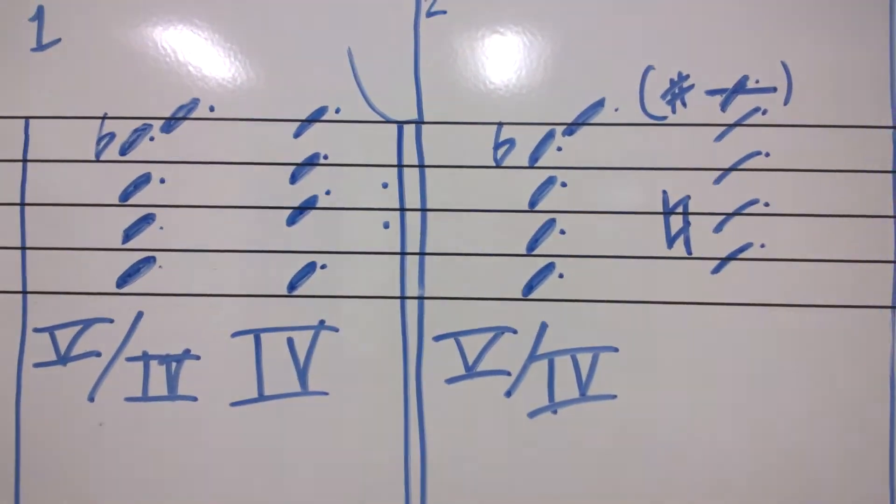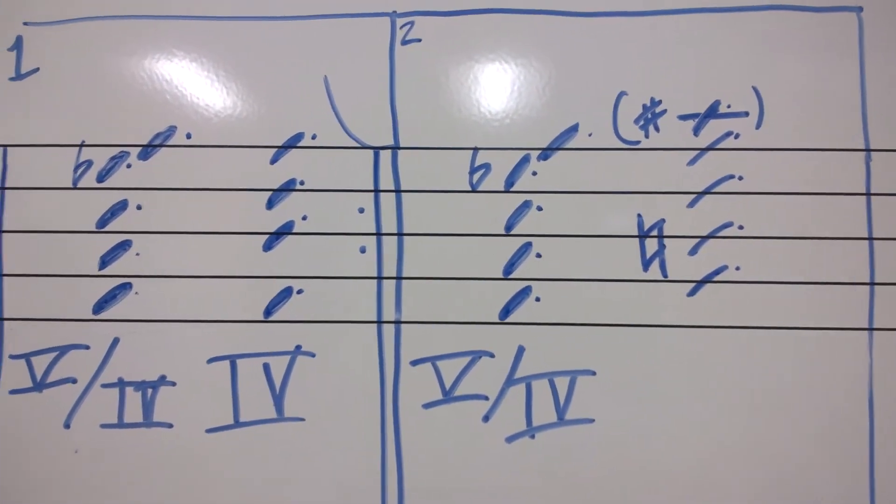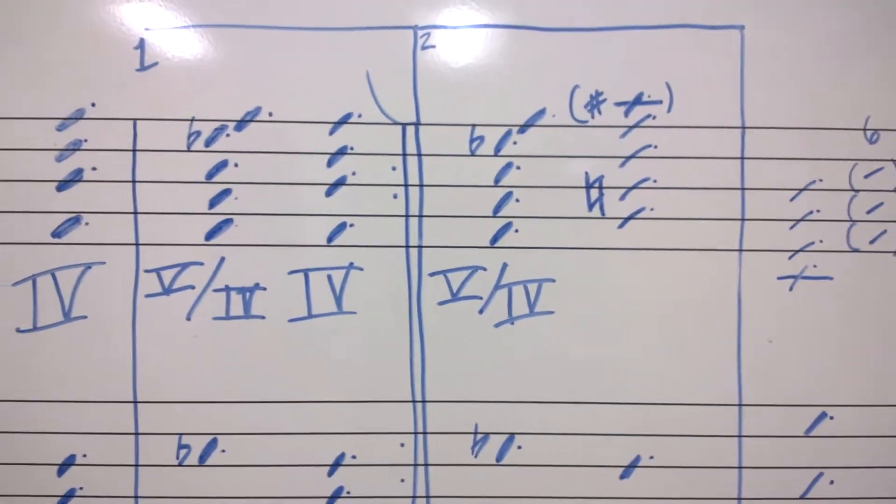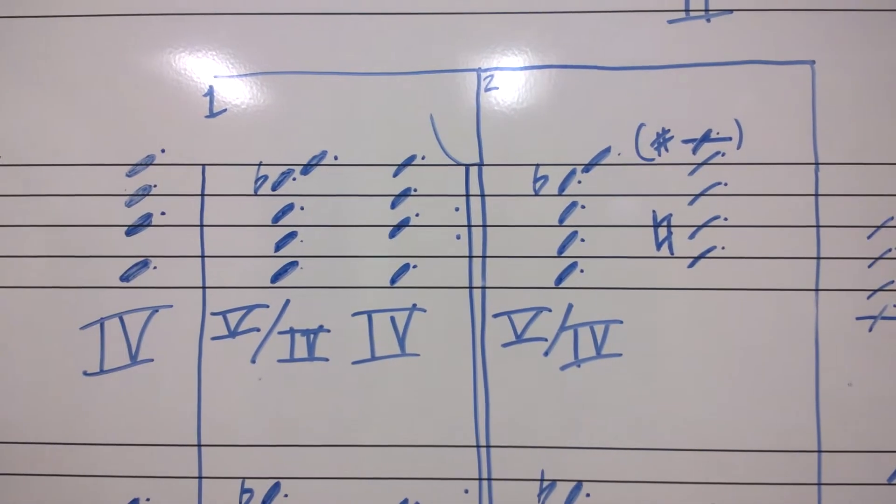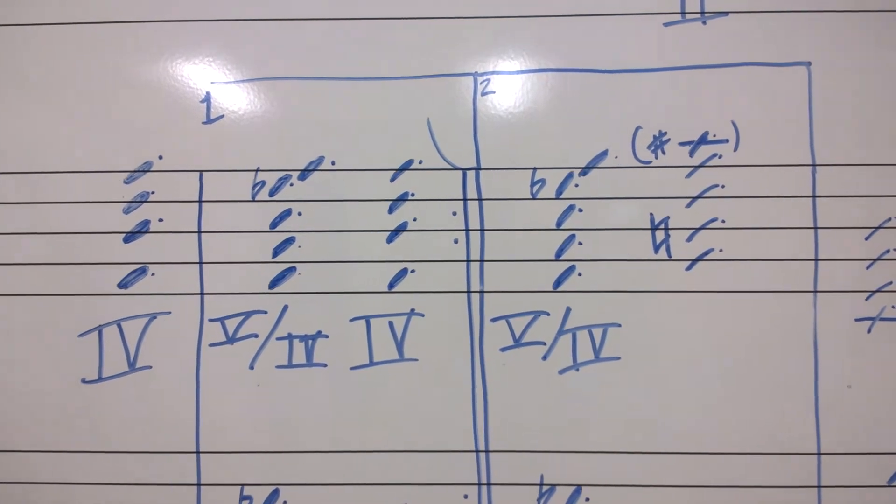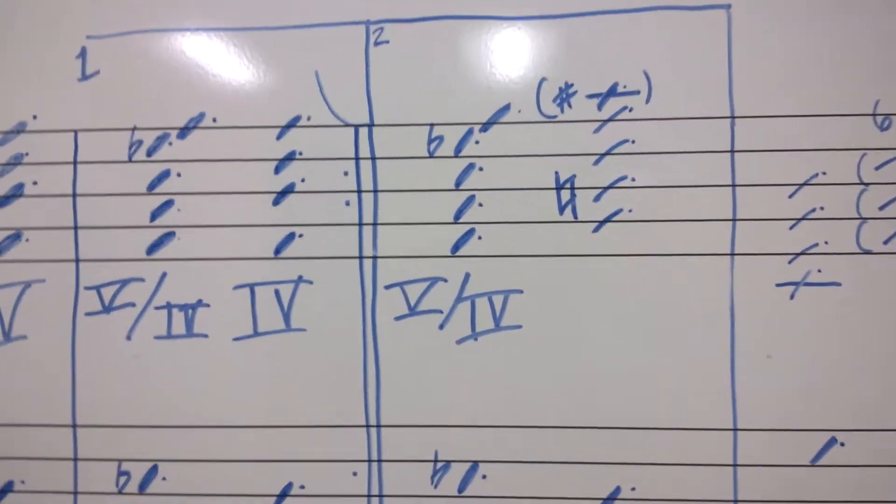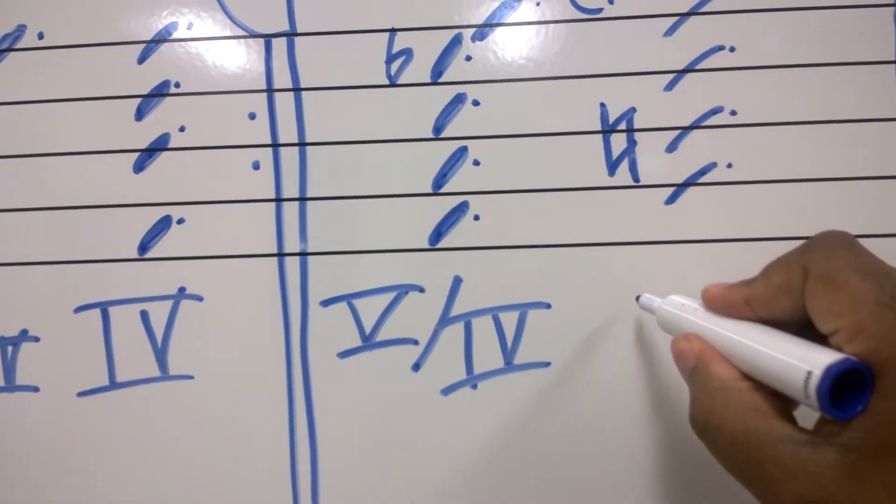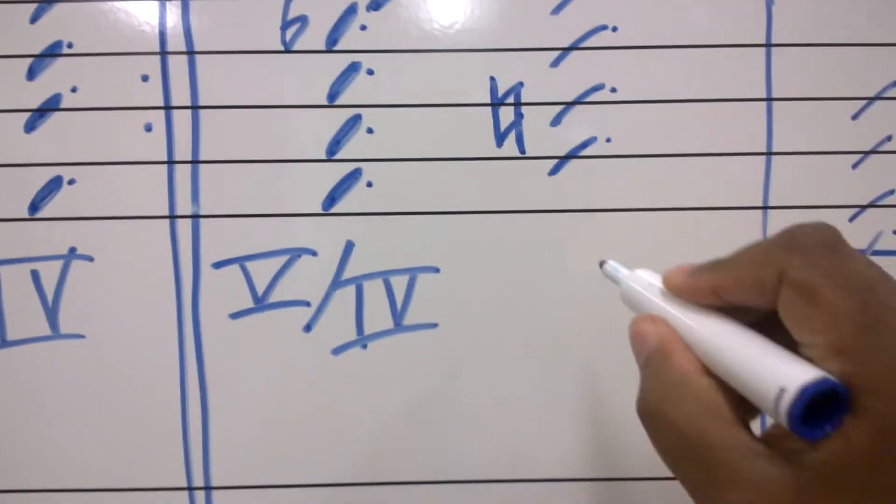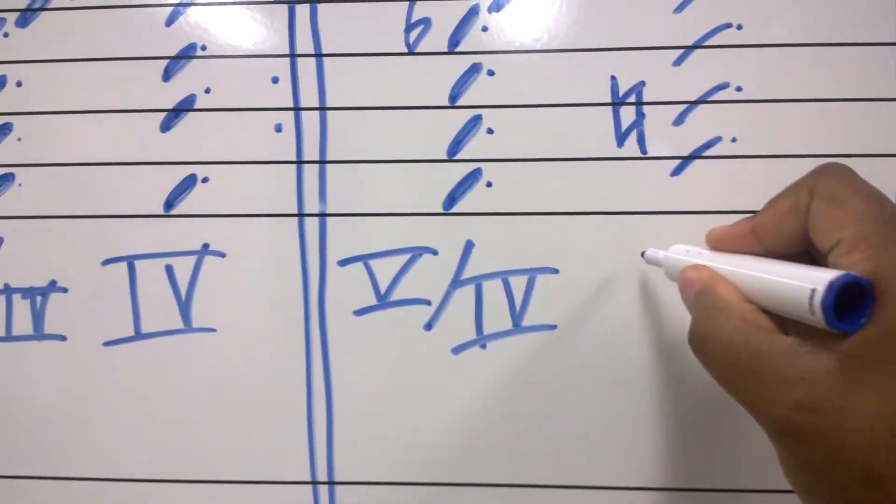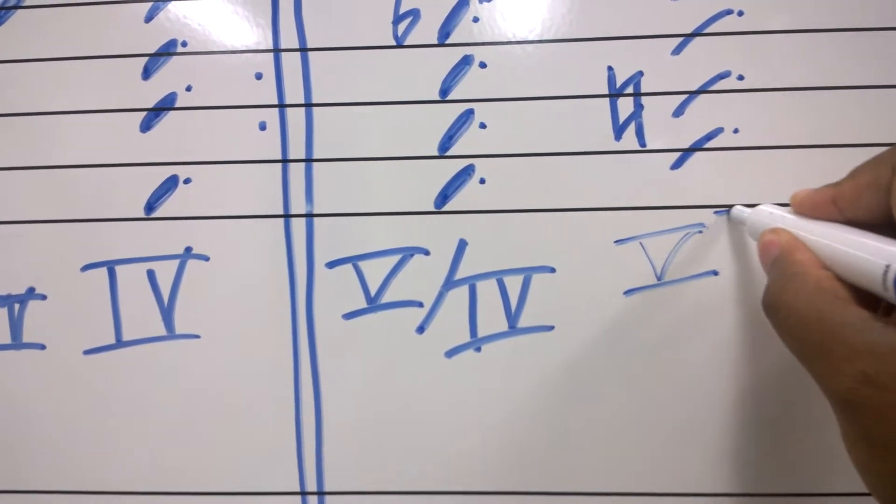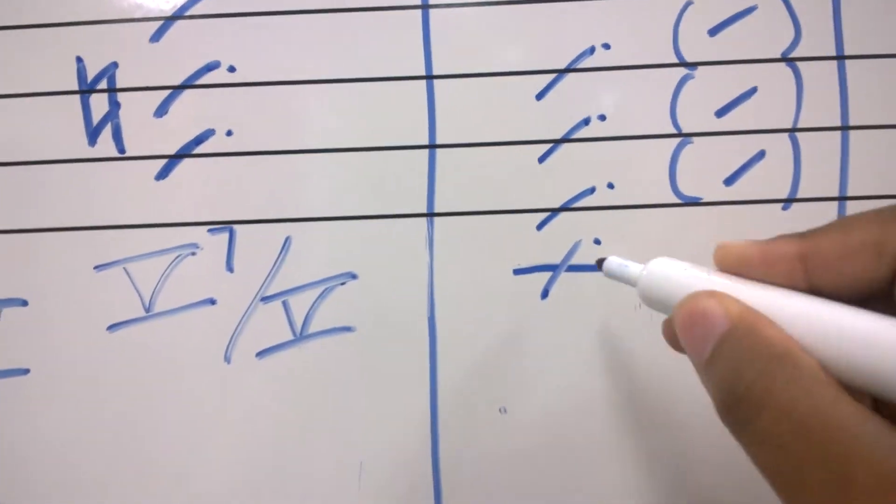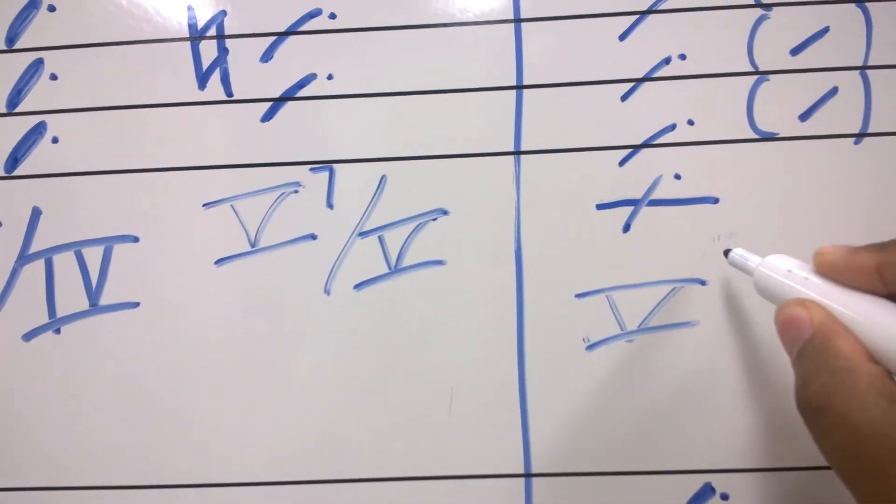Now, let's get back here. We have the G, B, D, F, and A sharp. So, what chord is that? I'll give you a few seconds to think about it. Take your time. All right. G is the dominant of C. So, C is the dominant of F. So, what we have here is the dominant 7 of the dominant. And the next chord is the dominant, C. C7, actually.